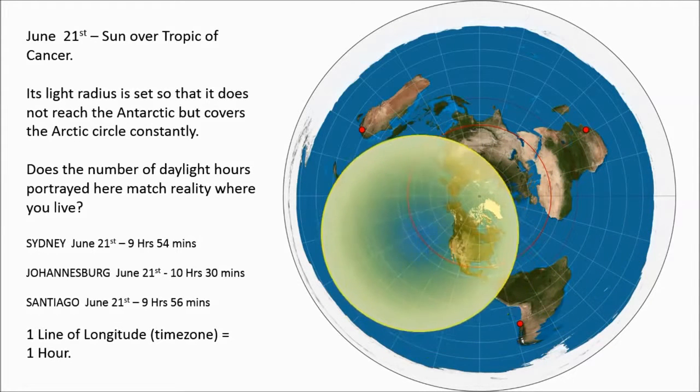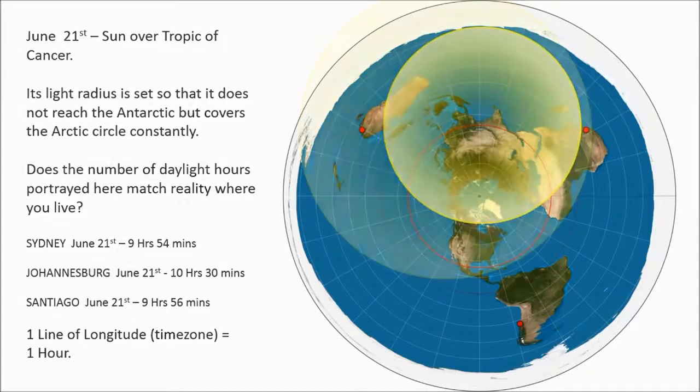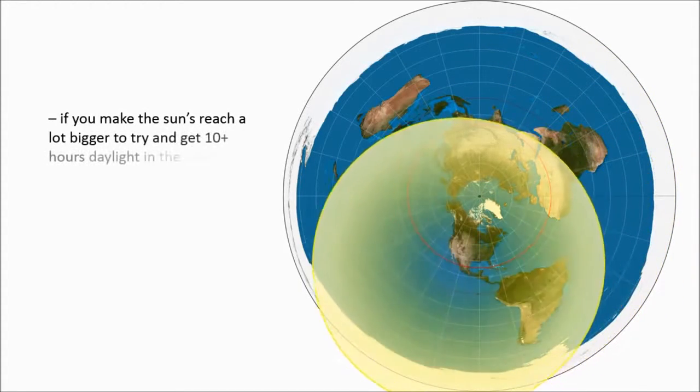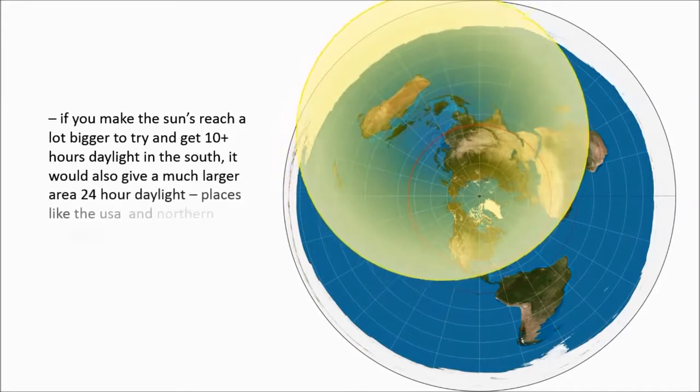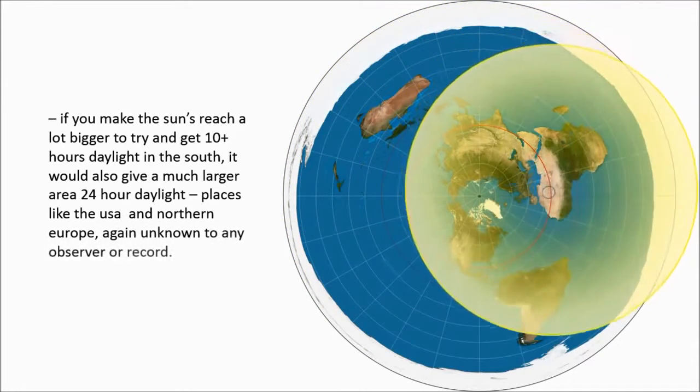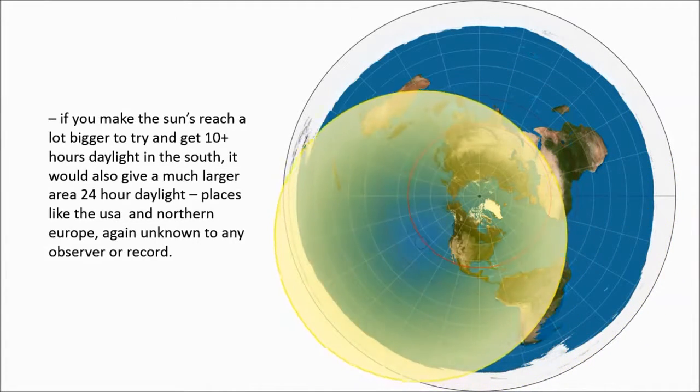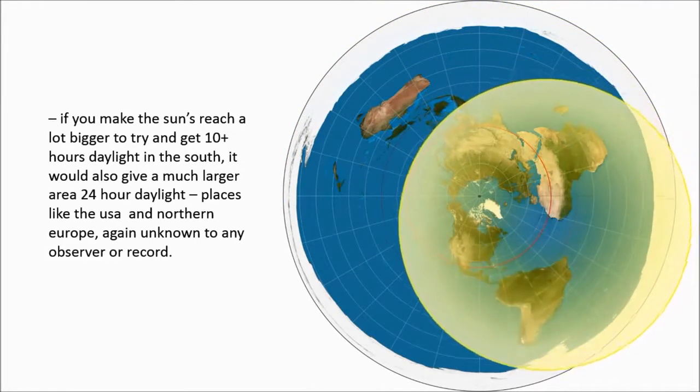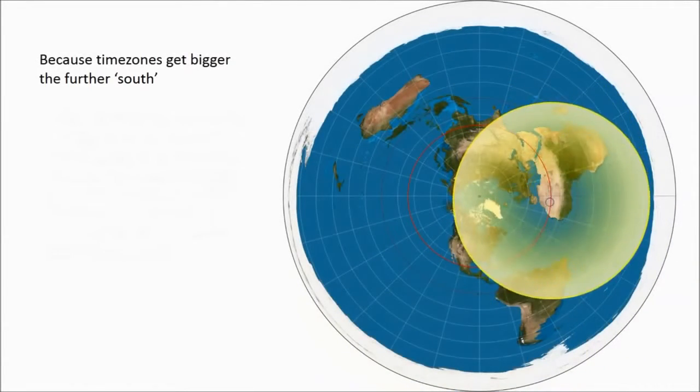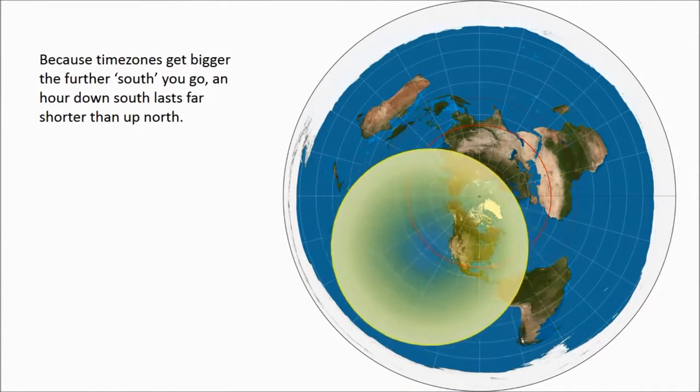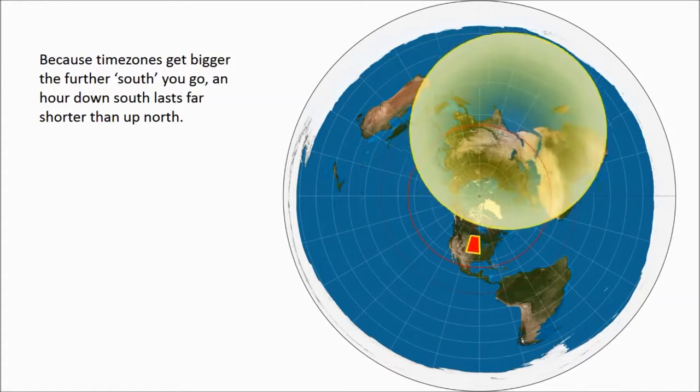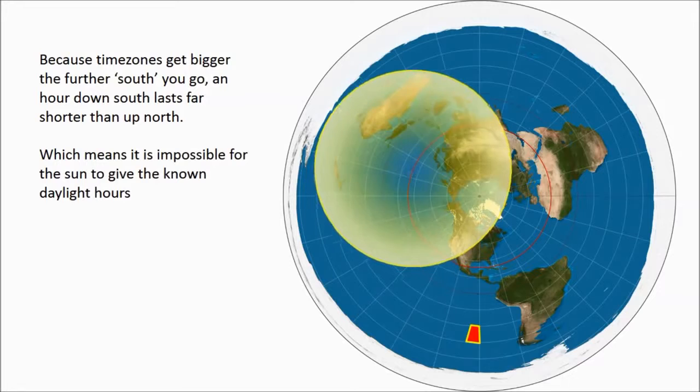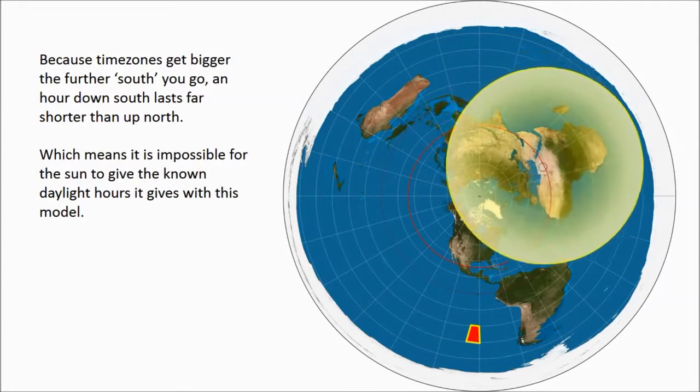You could set the sun's reach so it's now a lot bigger, now it will give 10 hours of daylight to those places where they actually receive it. But on the flip side, if you look in the north now, everywhere within the Tropic of Cancer is getting 24-hour light, which we know is not reality. It's inherently flawed because of the time zones. An hour up in Canada is worth 20 minutes down south. The sun's reach needs to be three times further down south. It doesn't make sense.